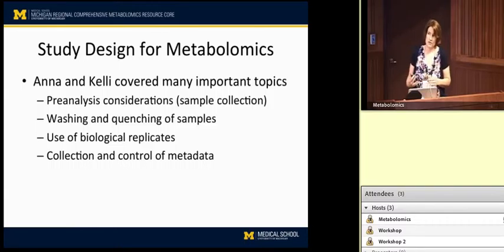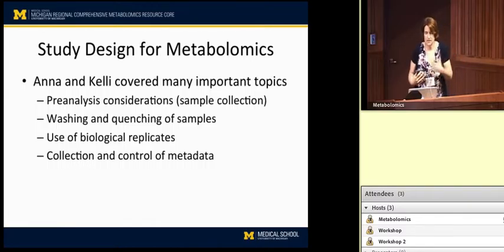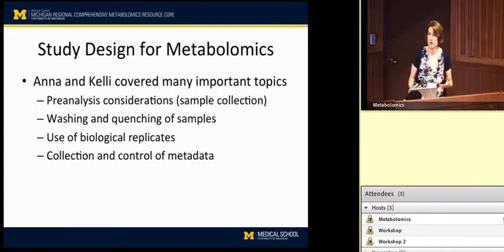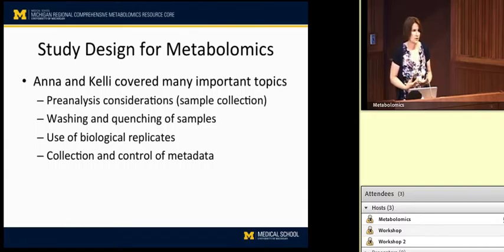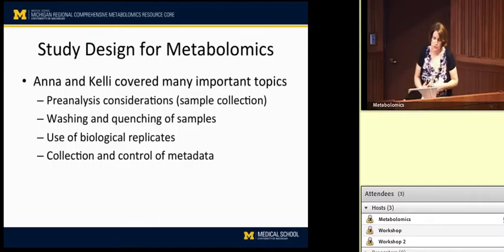They did not talk as much about the use of biological replicates. The more samples you have, as Chuck pointed out, the better your statistics will be. Even if you're doing a pilot study, it's probably a good idea to have some biological replicates. We recommend usually three at a minimum and more if possible, because you want clear data coming out of your pilot study — you're probably going to base a much bigger study on that, and put a lot of money into it.